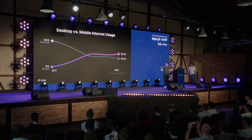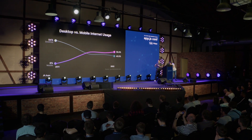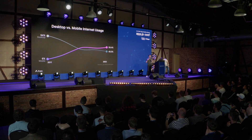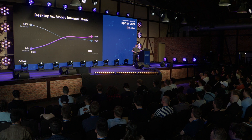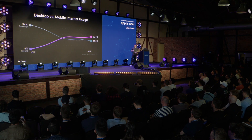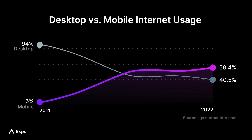In the last decade, mobile computing has gone from nearly non-existent to the majority of the way that we consume the internet, with an almost 10x increase, surpassing desktop worldwide. And on mobile, native apps make up over 90% of the time spent when you're on a device. The other 10% is in mobile web.